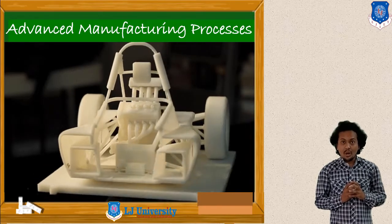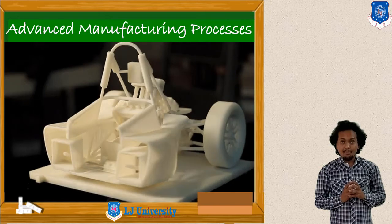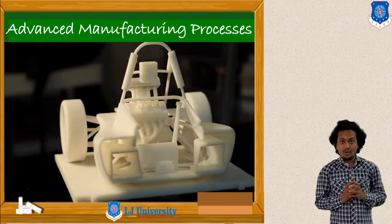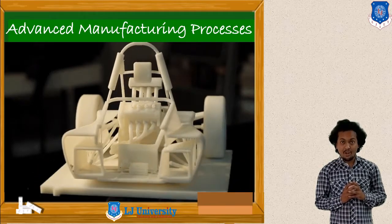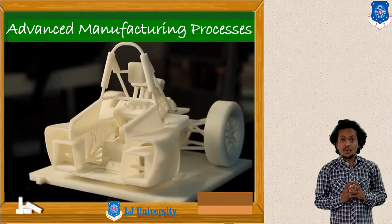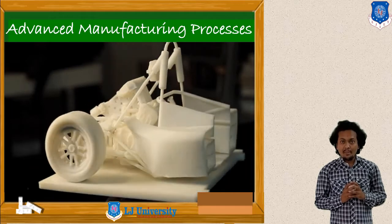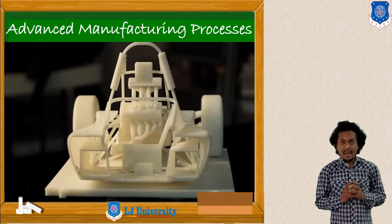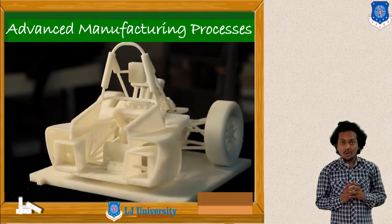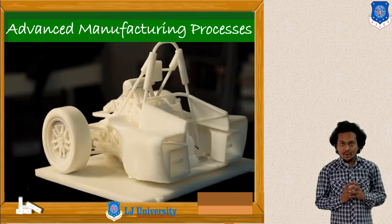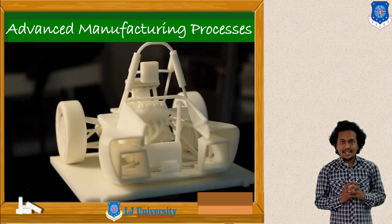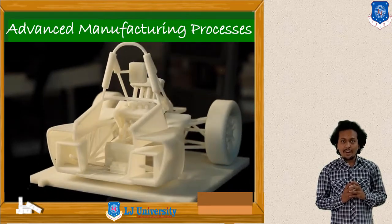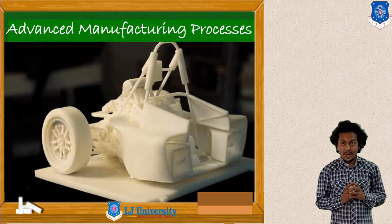In the chapter of Rapid Prototyping, we have started our discussion on various processes. Rapid Prototyping Processes can be classified based on the raw material form — that is, based on powder, liquid, or solid material.